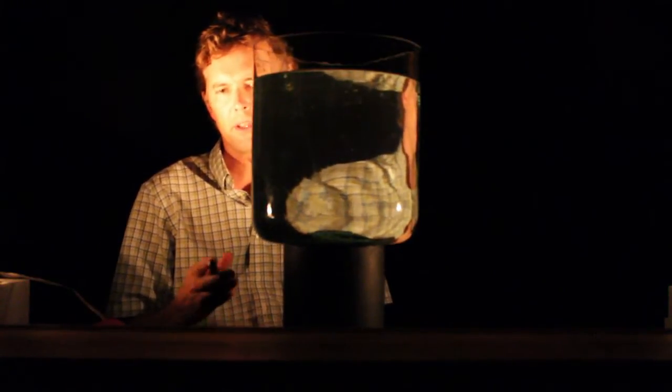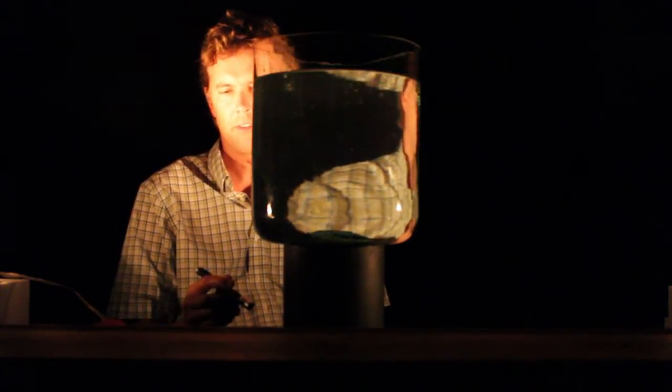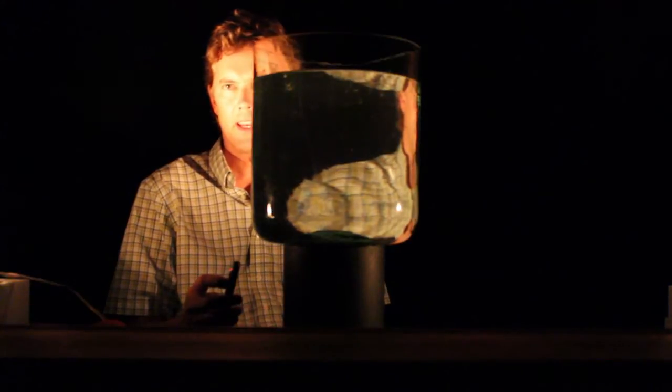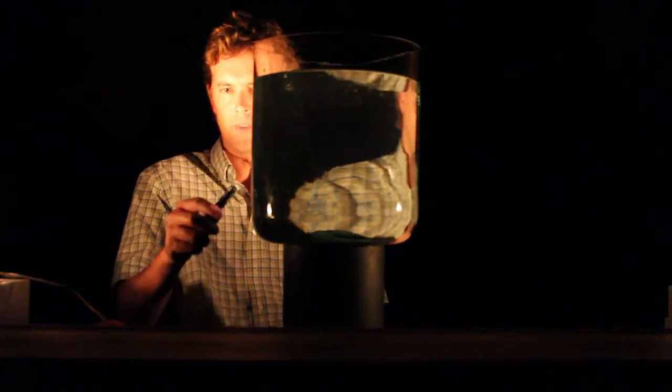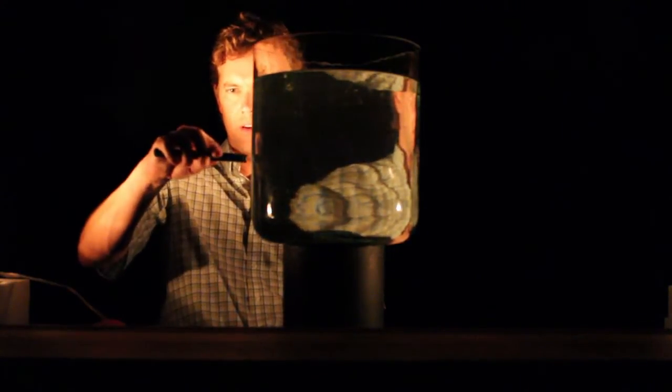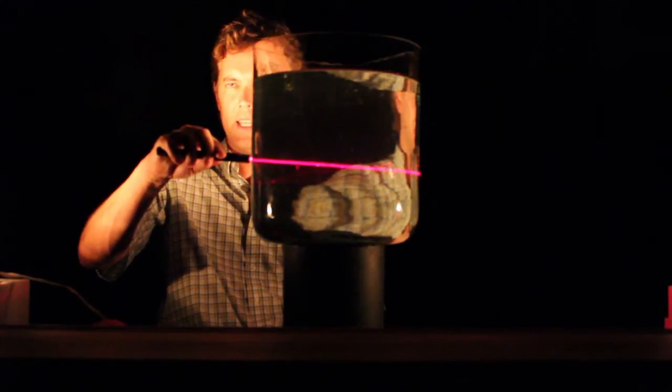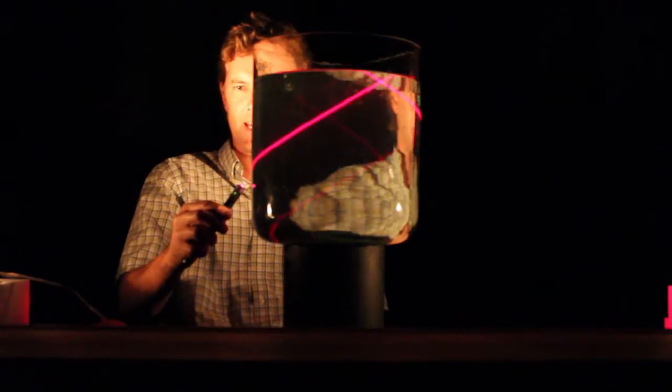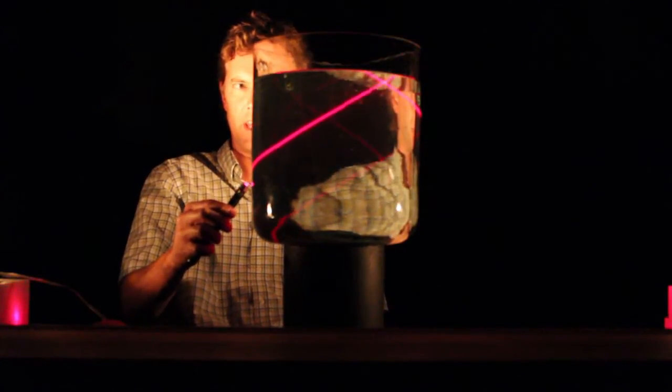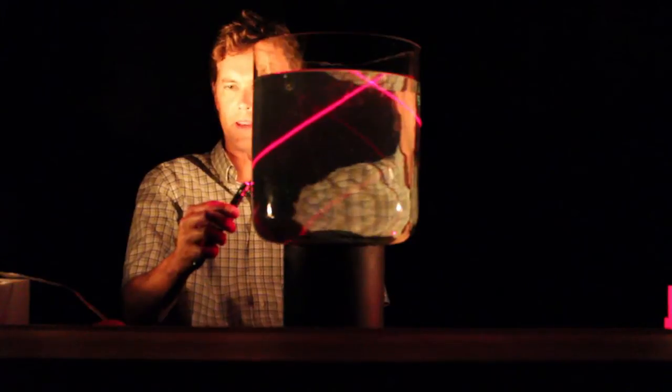Now this is a very nice demo because we can demonstrate a few things. The first thing that we can demonstrate is refraction. So when light goes in normally to the surface, it keeps going straight through the surface. But if light comes in at an angle to that surface, it bends. Here we see the light coming in and bending.